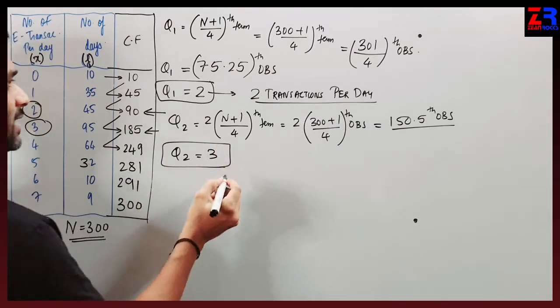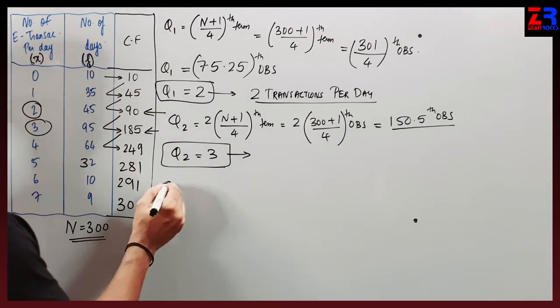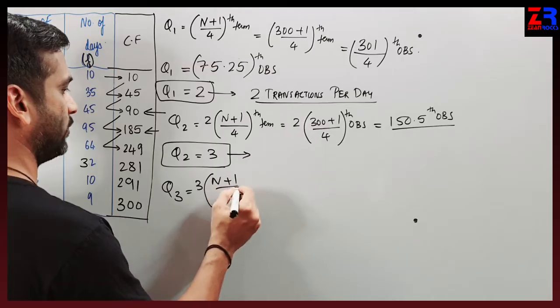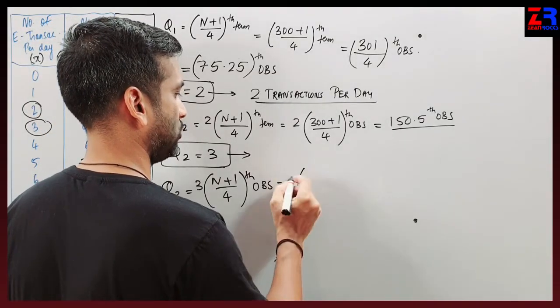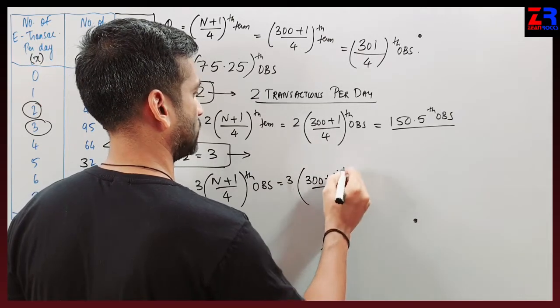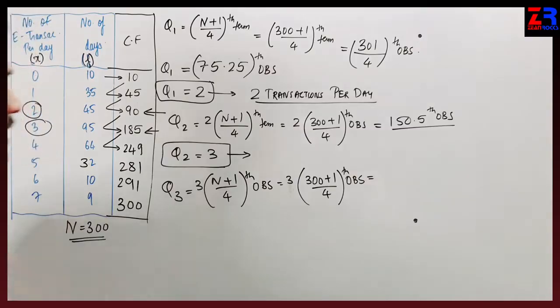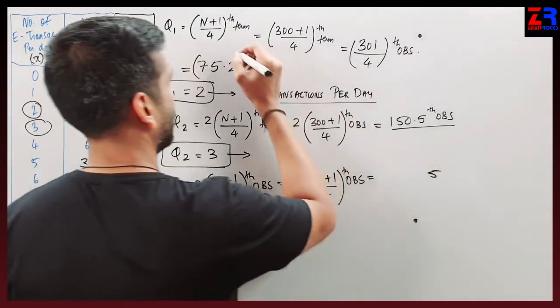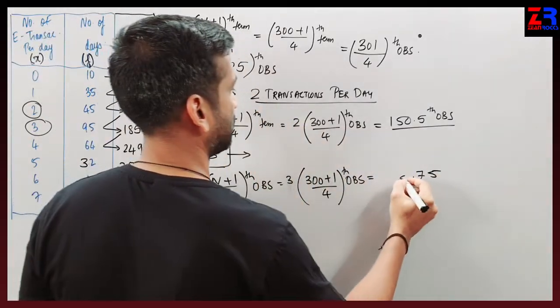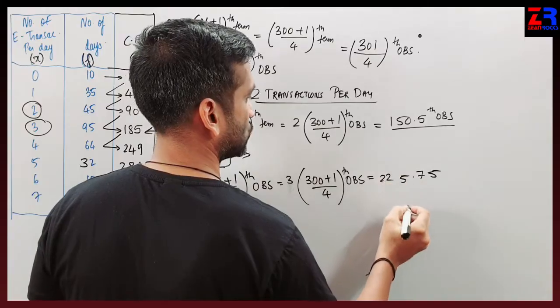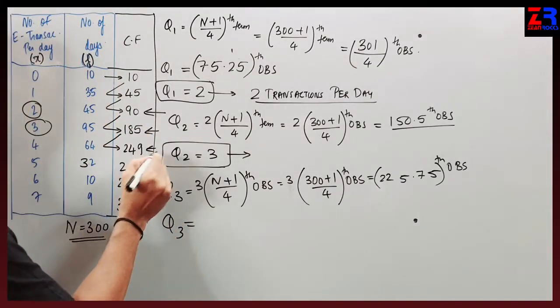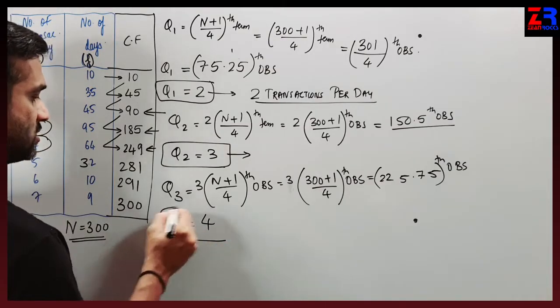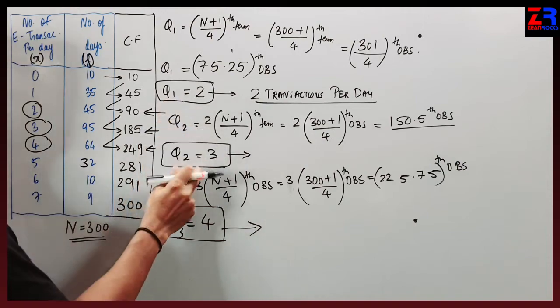Q3 is 3(N+1) divided by 4th observation, so 3 into 75.25 equals 225.75th observation. This falls in the class where the answer is 4 transactions per day. So quartile 1 is 2, quartile 2 is 3, and quartile 3 is 4.